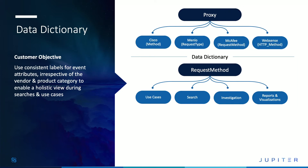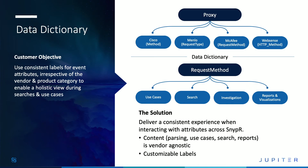The next thing I want to talk about is data dictionary. As a user in Sniper, you may be interacting in search, interacting with a use case, or following up on an investigation. In all these scenarios, event attributes are really important to the task at hand. These event attributes should be tied back to a consistent label — consistent by product category and agnostic to the vendor — so you're not having to worry about doing all this mapping between different technologies. And that's what we've delivered with data dictionary.